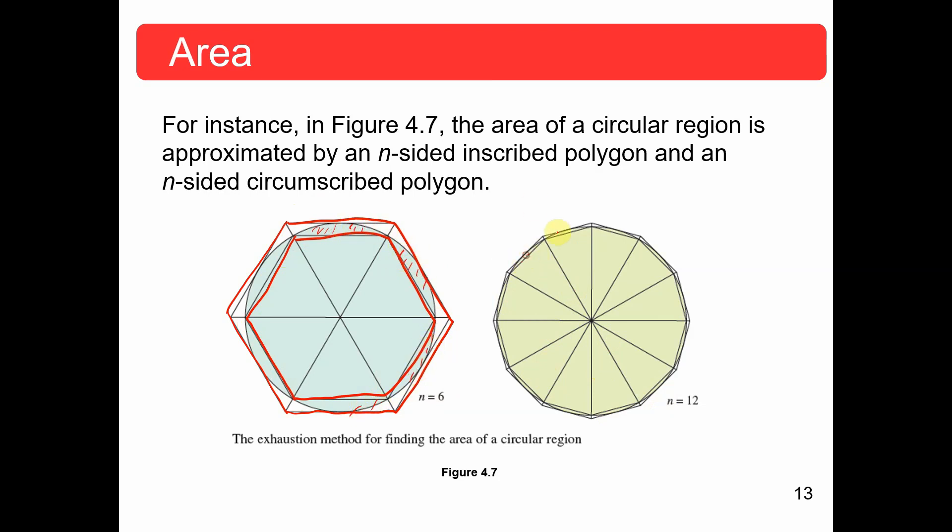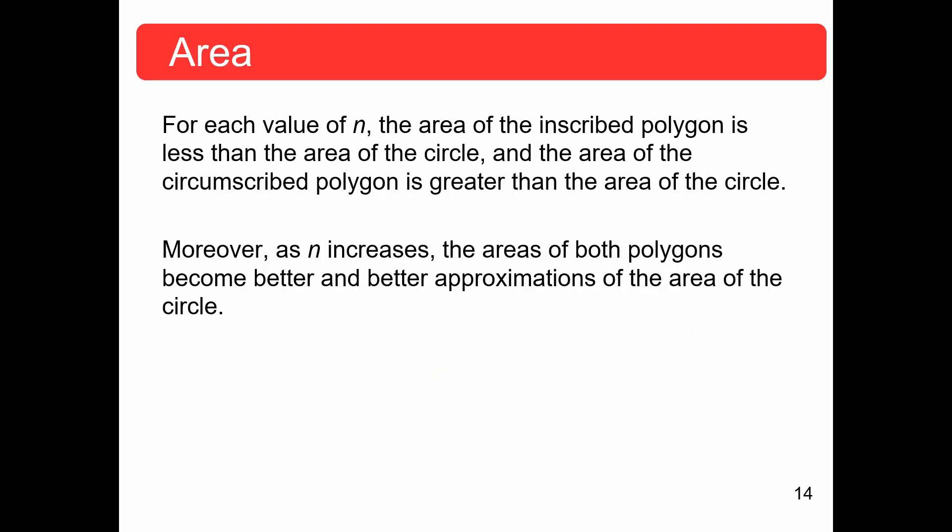That gap has become a lot smaller the more I let n go up. And this is really cool because you'll notice that the circumscribed polygon is always going to be bigger than the inscribed polygon in terms of the area. But as n gets bigger, those areas kind of get closer and closer to each other and to the actual area of the circle.